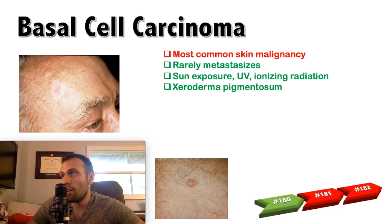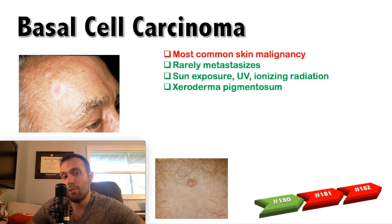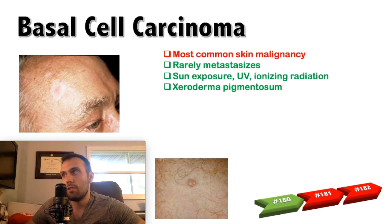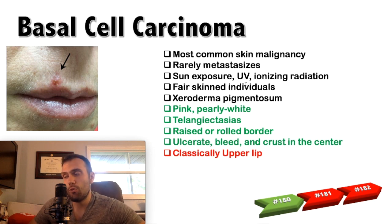Risk factors include sun exposure, UV radiation, ionizing radiation, and the classic disease process they like to ask about on Step 1: xeroderma pigmentosum. These risk factors — sun exposure, radiation, xeroderma pigmentosum — are all also risk factors for squamous cell carcinoma. Fair-skinned individuals are also at increased risk; if you have fewer melanocytes, you have an increased risk of some form of primary skin carcinoma or even melanoma.